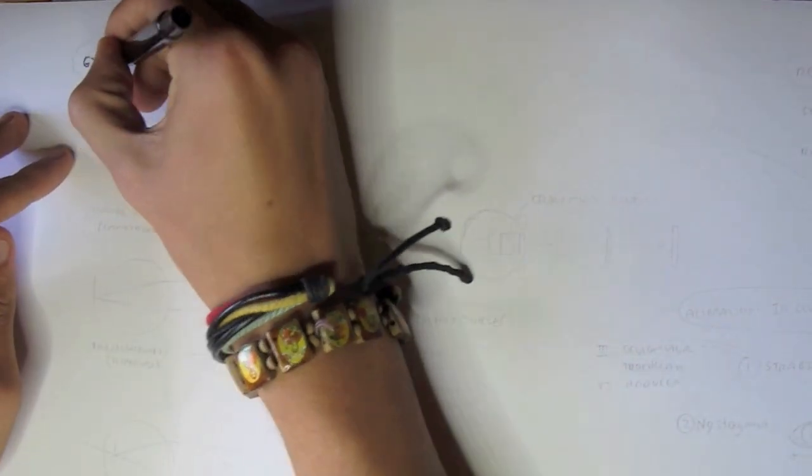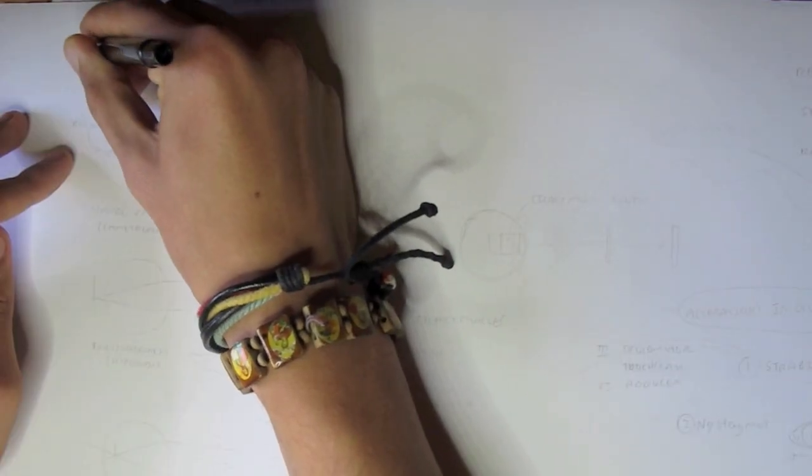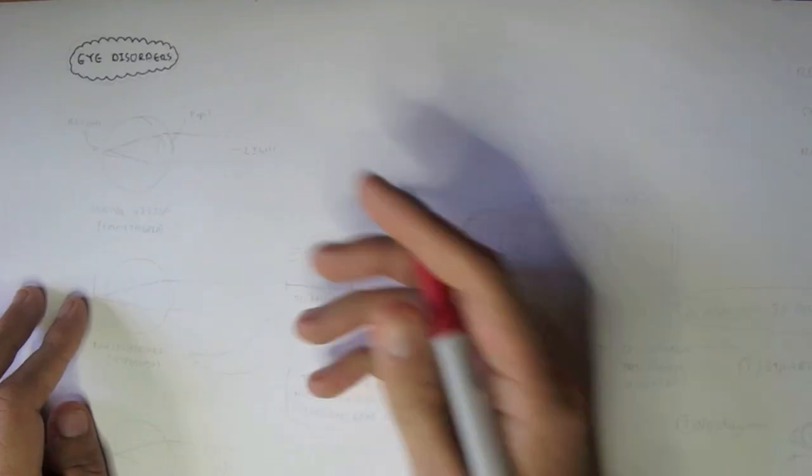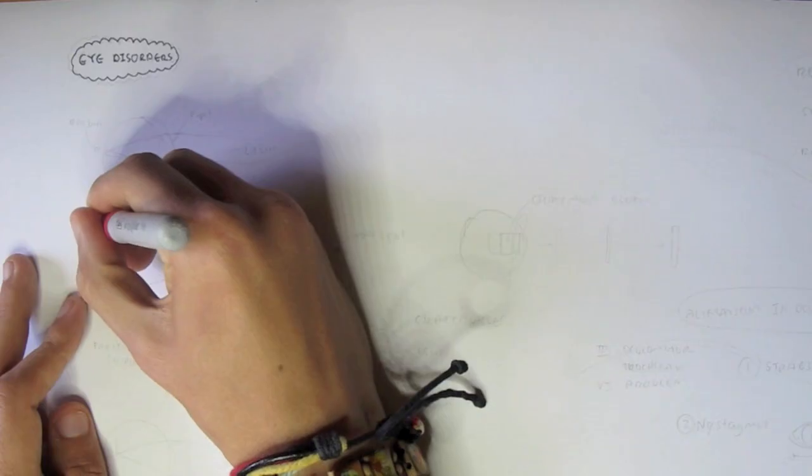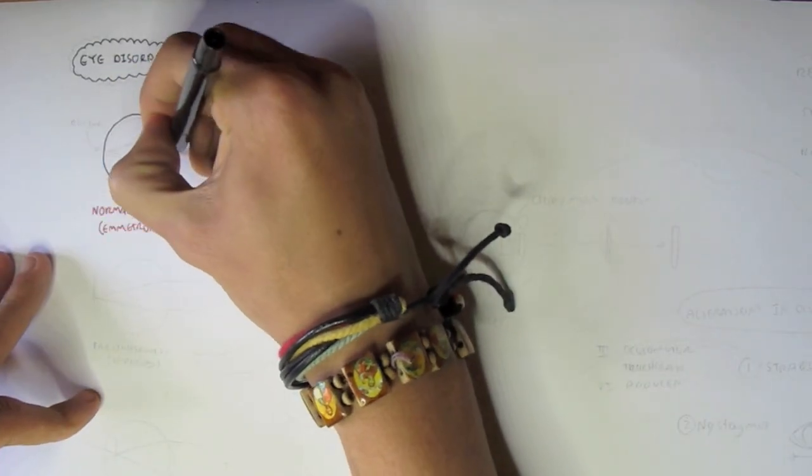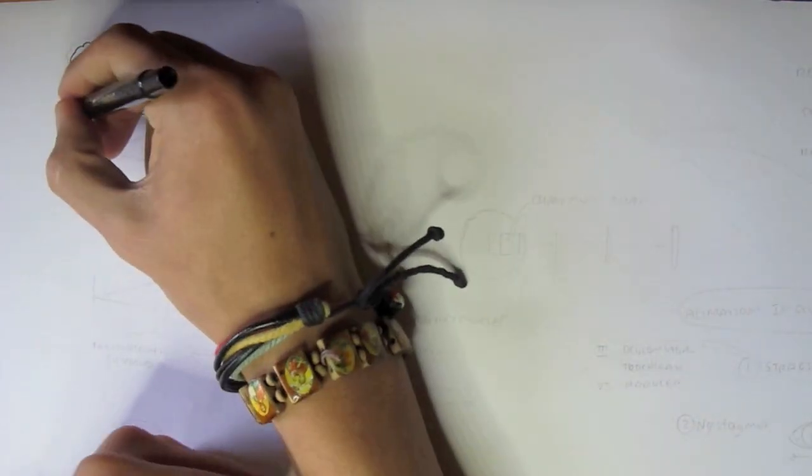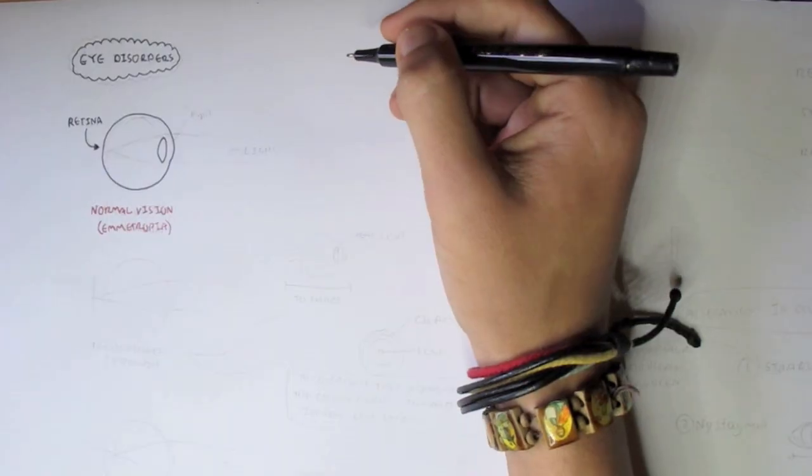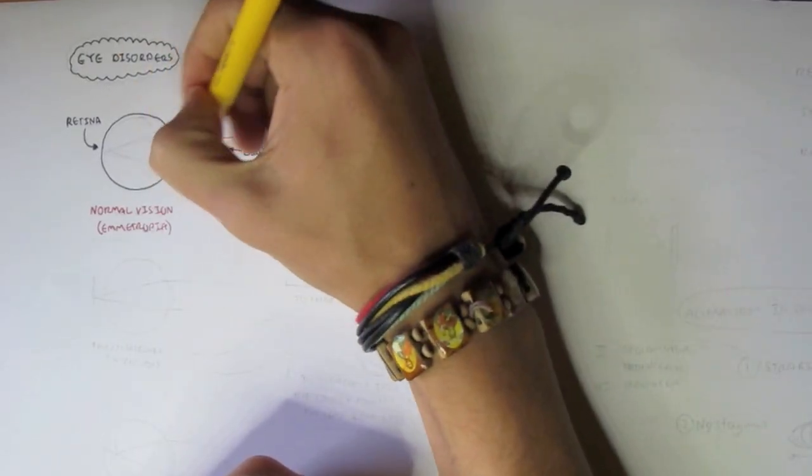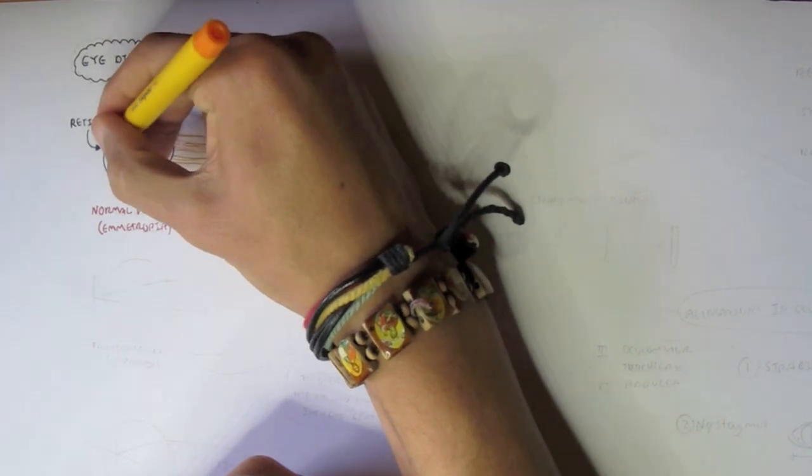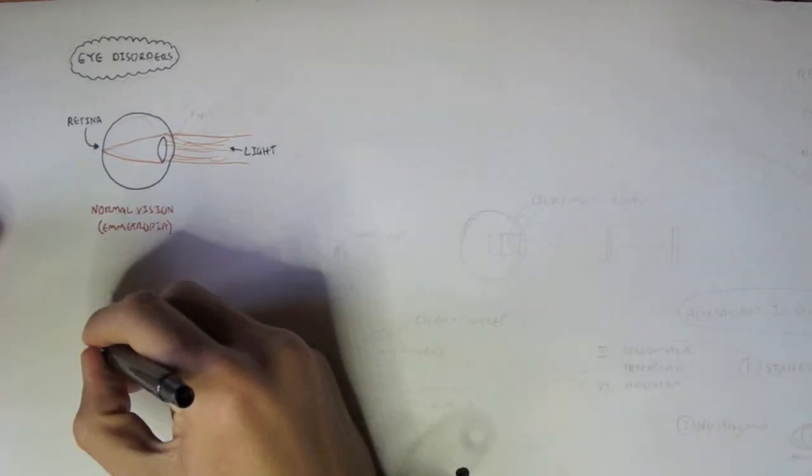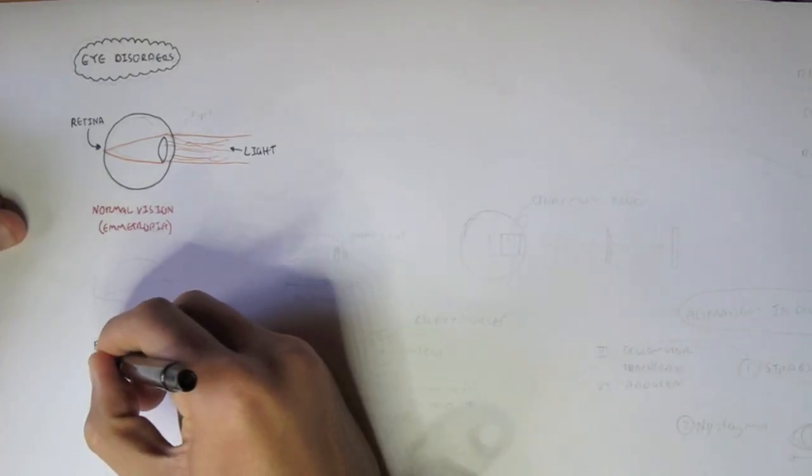This video is on eye disorders and various eye conditions and diseases. First I'd like to begin by showing you how normal vision works, also known as emmetropia. So here we have an eyeball, the lens, and at the back of the eyeball we have the retina, our photoreceptors, that receive light and send them to the brain. Light comes into our eyes this way, and the lens refracts the light and focuses the light onto the back of the retina, where it then passes the information onto the optic nerve and to the brain. So that's how normal vision works.